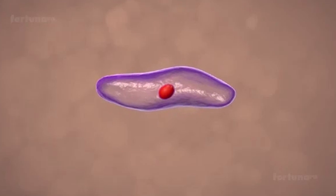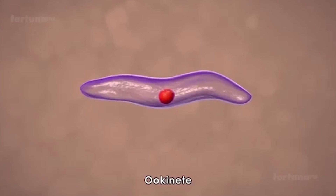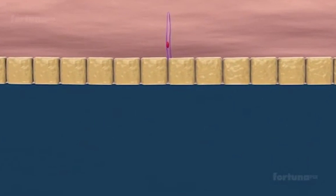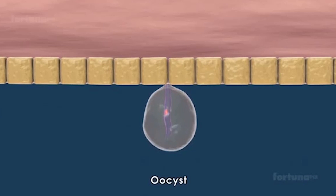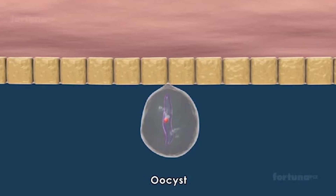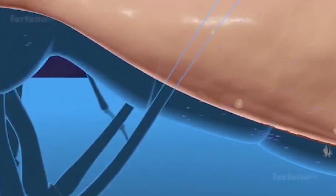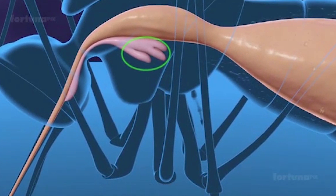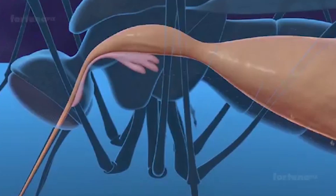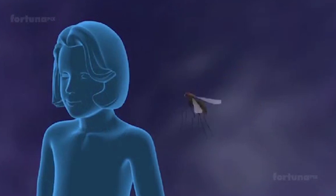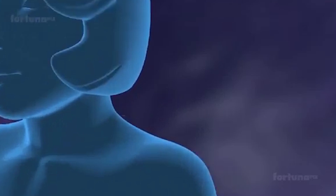The cygot becomes motile and elongates, giving rise to eukinate, which invades the meat cut fall. Eukinate in the meat cut fall develops into osages. Osages develop and release spirocytes, which find their places in the salivary gland of mosquitoes. When a mosquito takes a blood meal from a human, it injects its parasite into the blood, initiating a new cycle.